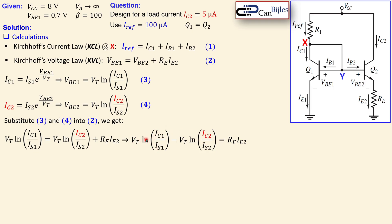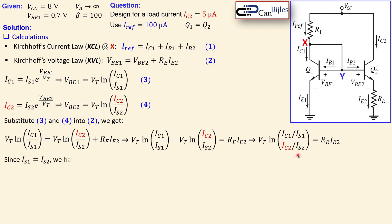Taking VT out and using the identity ln(A) − ln(B) = ln(A/B), we get a nice result. Since Q1 and Q2 are matched, IS1 = IS2, so they cancel out, leaving only IC1 and IC2 in the logarithm. The right-hand side is still RE · IE2. So we have: VT · ln(IC1 / IC2) = RE · IE2. This is equation 5.